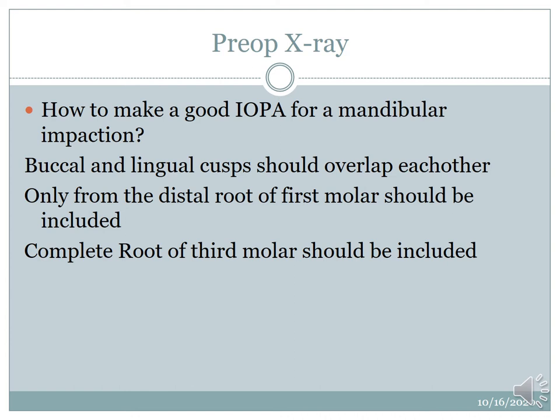How to make a good IOPA for a mandibular impaction? This is the most critical step when evaluating the radiograph for surgical removal of a third molar. If the radiograph is not properly taken, you can miss the treatment planning. Three criteria must be followed: the buccal and lingual cusps should overlap each other for the second molar and the first molar; only the distal root of the first molar should be included in the radiograph; and the complete root of the third molar should be included.